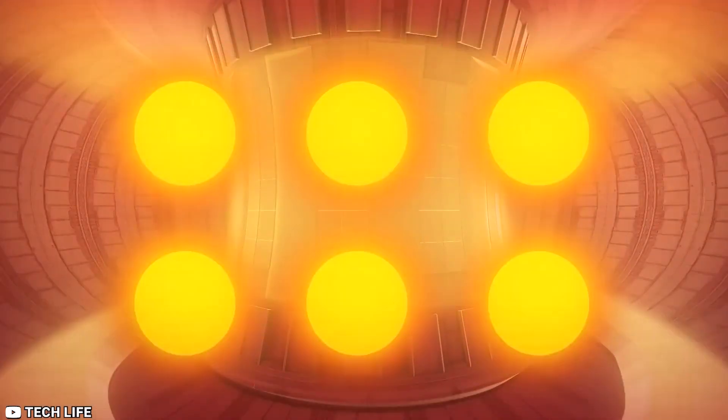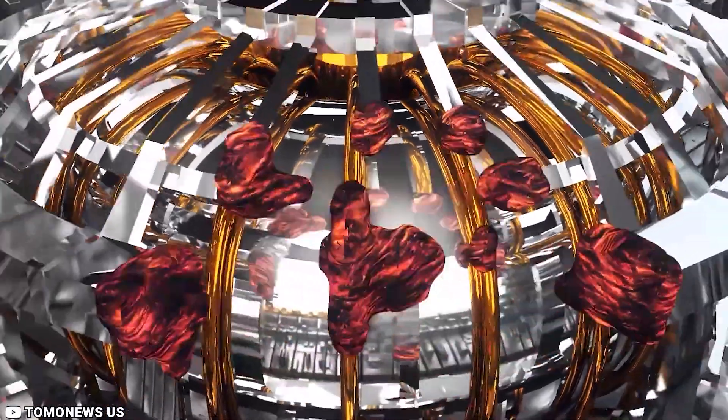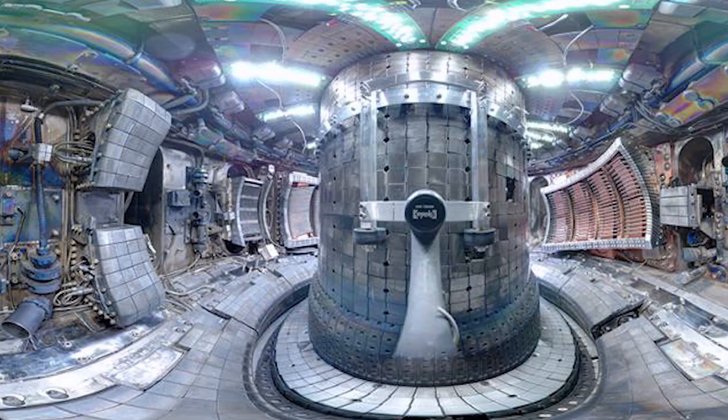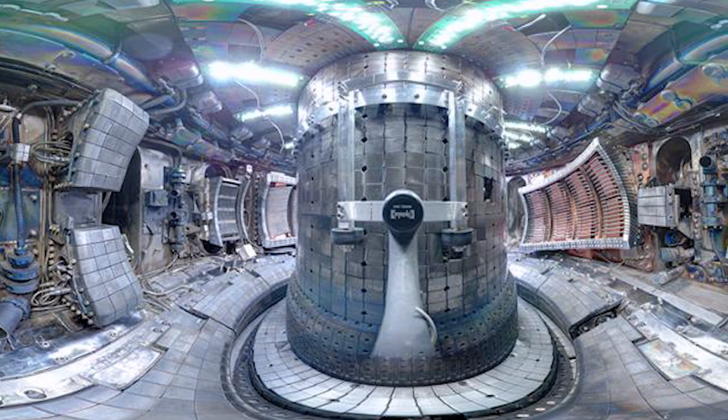Like a traditional power plant, a fusion plant will utilize this heat to create steam before converting it into energy using turbines and generators. A tokamak's vacuum chamber, which has the shape of a doughnut, is its brain.